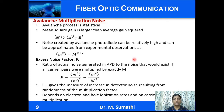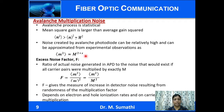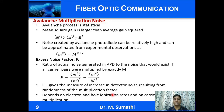Avalanche multiplication noise exists in avalanche photodiodes and is not present in PIN photodiodes. The avalanche multiplication process itself is statistical in nature, and the mean square gain is larger than the average gain squared. The noise generated by the APD is approximated by experimental observations as M^(2+x). The excess noise factor F is defined as the ratio of actual noise generated by the APD to the noise that would exist if all carrier pairs were multiplied by exactly M. F gives a measure of the increase in detector noise resulting from randomness in the multiplication factor, and depends on electron and hole ionization rates and carrier multiplication.